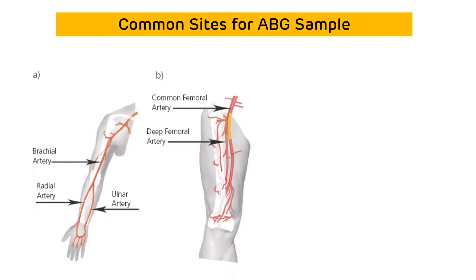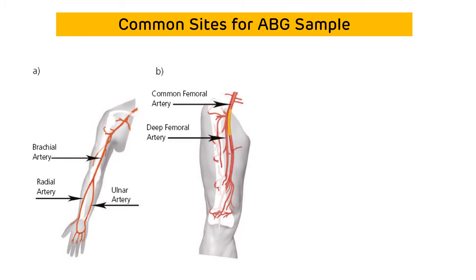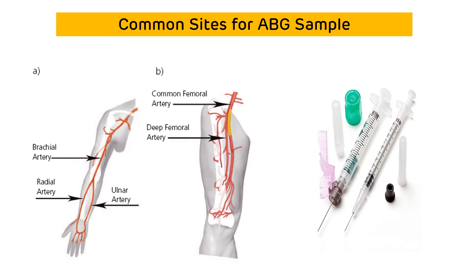This picture shows the common sites for ABG sample collection in the upper limb as well as the lower limb. Common sites in the upper limb are the brachial artery, radial artery, and ulnar artery. Common sites in the lower limb are the common femoral artery and deep femoral artery. The ABG sample must be collected in a specialized syringe called a heparinized syringe.